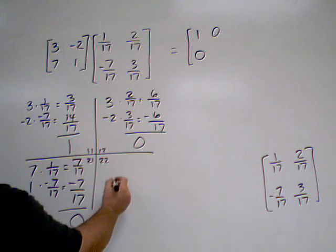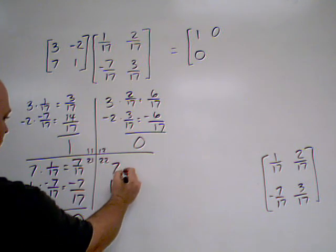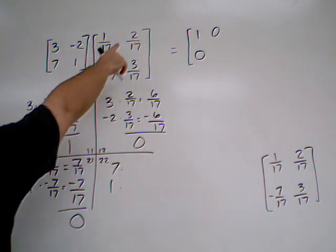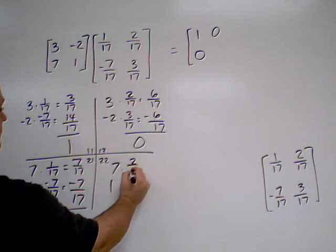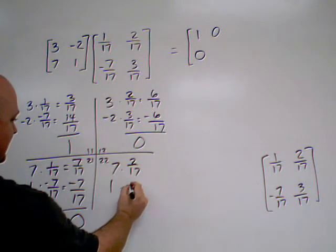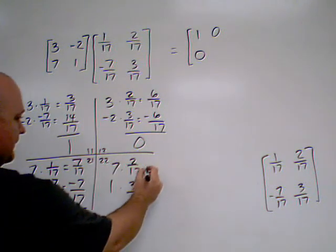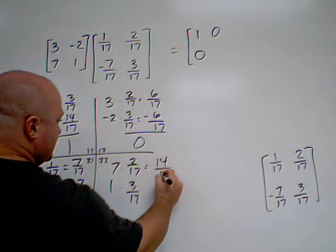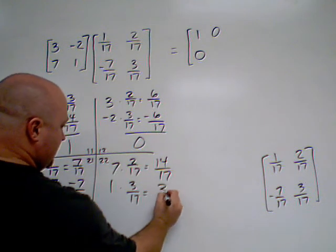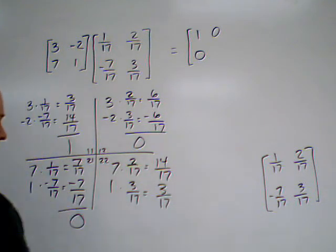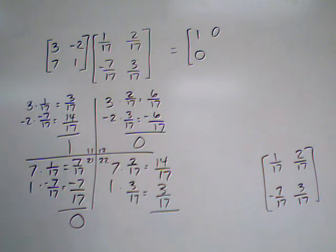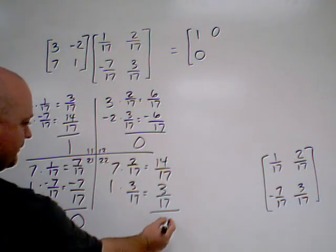Finally, we have 7 and 1 times column 2, so 2 seventeenths and 3 seventeenths. This will give us 14 seventeenths and 3 seventeenths. We add these together and guess what we get again? 1.